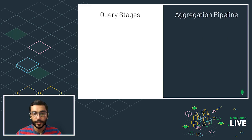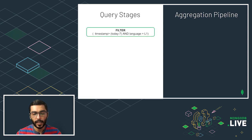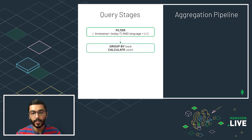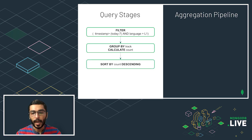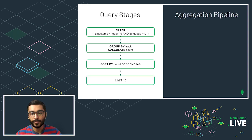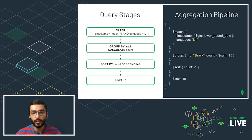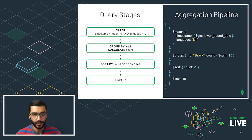Here's how the query looks: first, filter all events by timestamp and language; then group by track and find the count of each track; then sort in descending order and pick the first 10. In the MongoDB aggregation pipeline, this maps to a match stage for filtering, a group stage for aggregating, and then sort and limit stages.